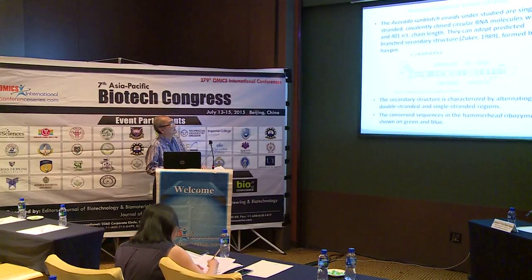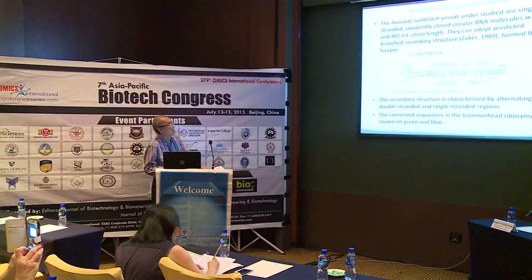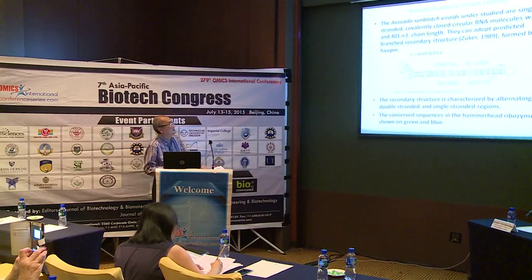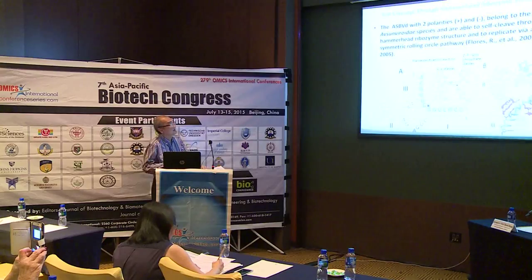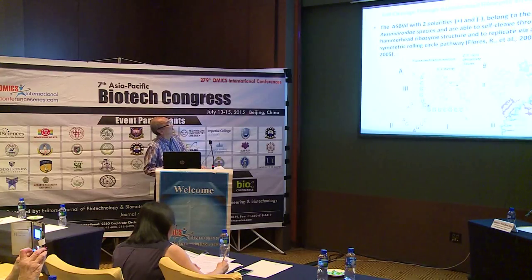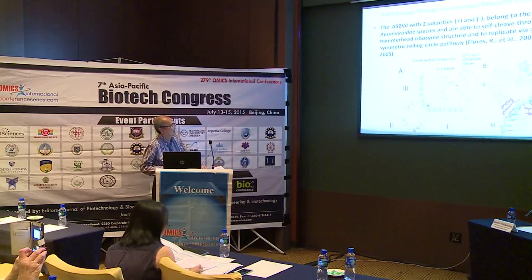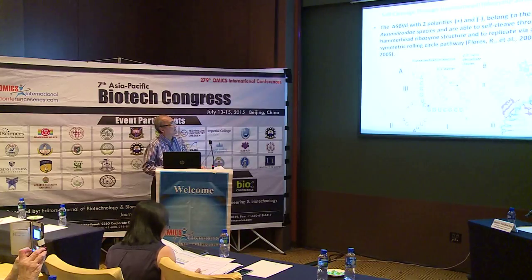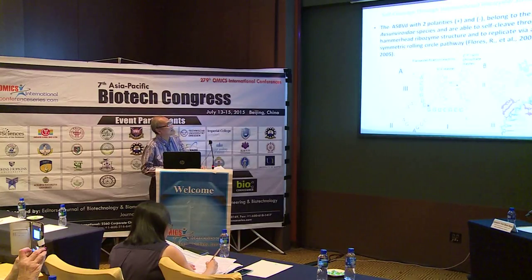Here is the predicted structure of the viroid. In green are the conserved nucleotides. Here is the central core surrounded by a double strand. Here is the mechanism for the self-cleavage through the hammerhead ribozyme structure. The central core here, in red, is the conserved nucleotide. The mechanism for the self-cleavage is the transformation of the 5'-3' phosphodiester to a 2',3'-cyclic phosphodiester.